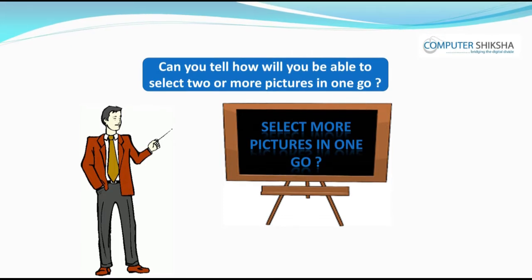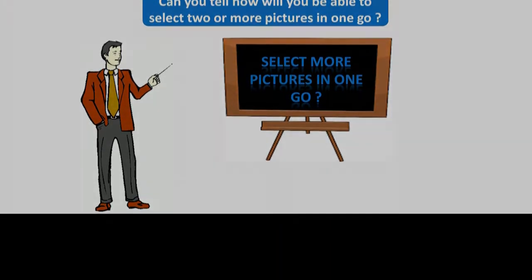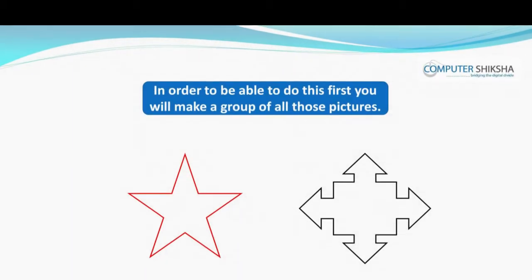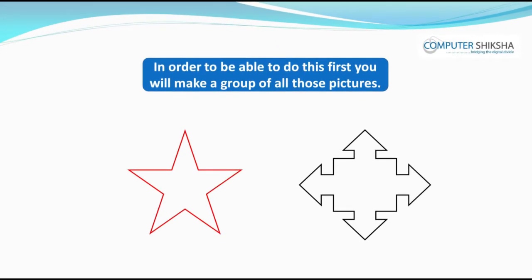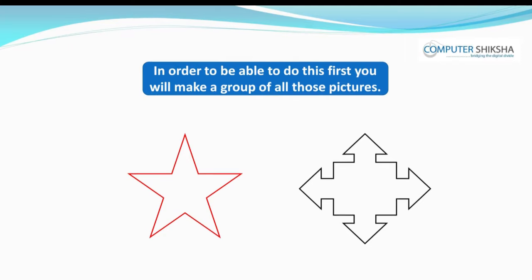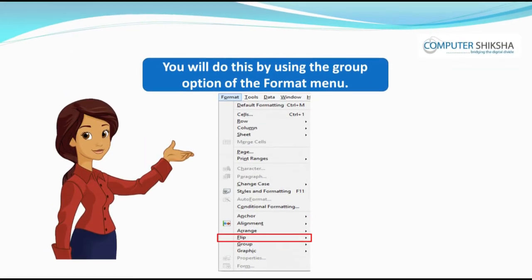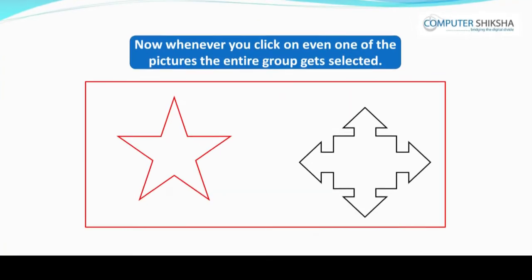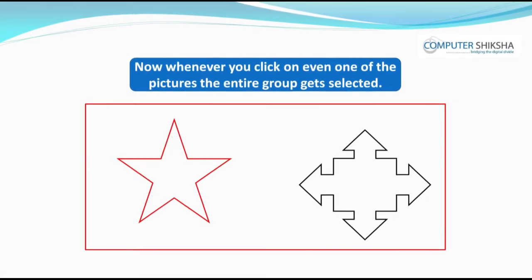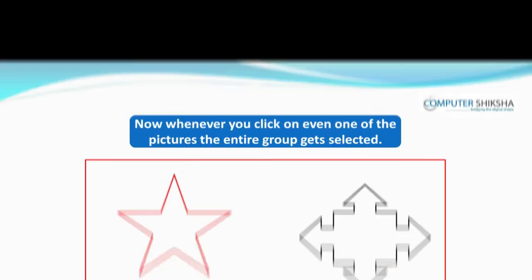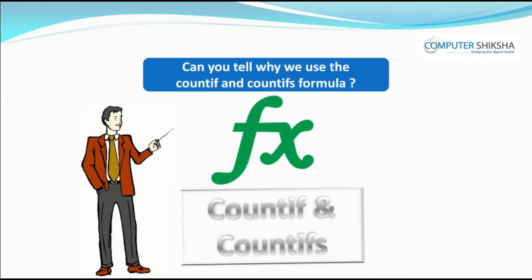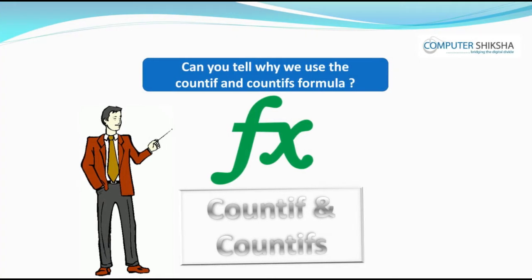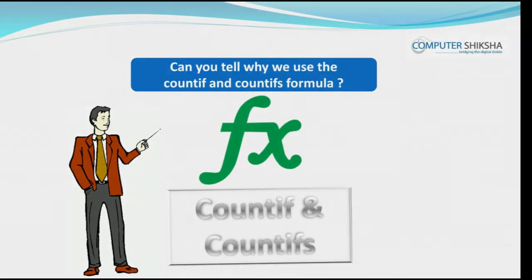Can you tell how you will be able to select two or more pictures in one go? In order to do this, first you will make a group of all those pictures. You will do this by using the Group option of the Format menu. Whenever you click on even one of the pictures, the entire group gets selected.